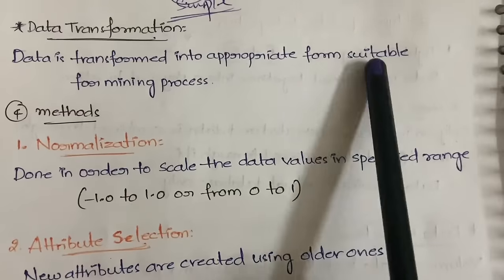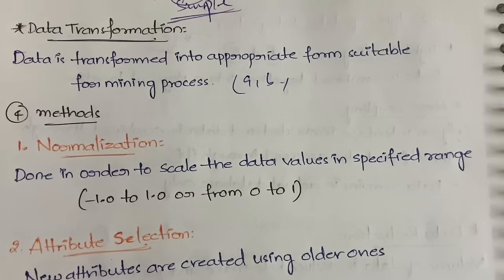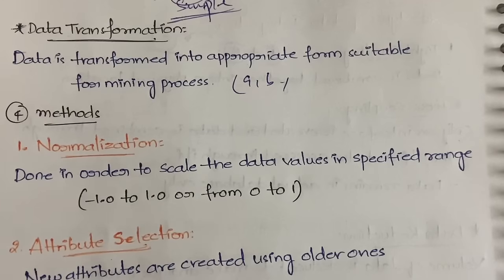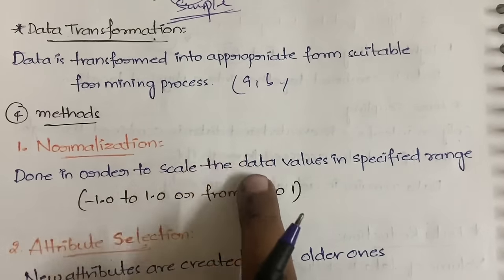Next is data transformation, where data is converted into an appropriate form suitable for the data mining process. Raw data cannot be used directly for mining operations; it must be in a suitable format. Data transformation has four methods. First is normalization, which scales data values within a specified range such as 0 to 1 or -1 to +1, applicable when data can be meaningfully scaled.